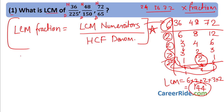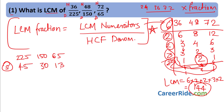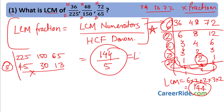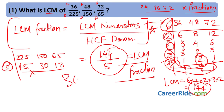Now find the HCF of denominators: 225, 150 and 65. All are divisible by 5: 5×45=225, 5×30=150, 5×13=65. 45, 30 and 13 — these 3 are not divisible by any single number (13 is prime), so we stop. The HCF of denominators is 5. Therefore, LCM of the fraction = 144 ÷ 5. With practice, you will be able to solve this sum in hardly 30 seconds.